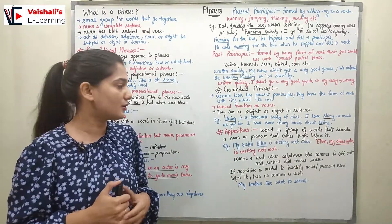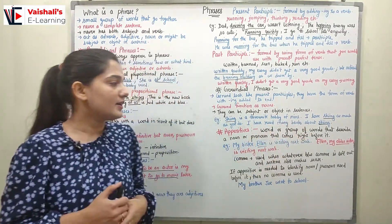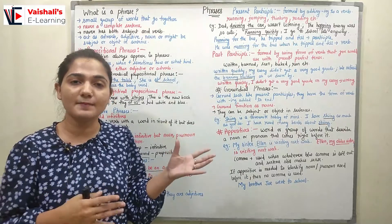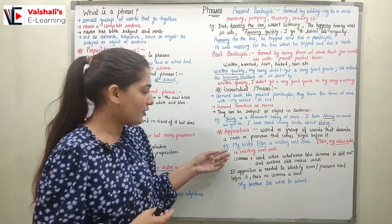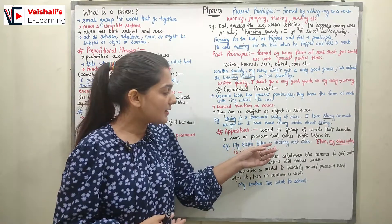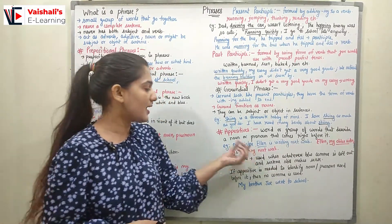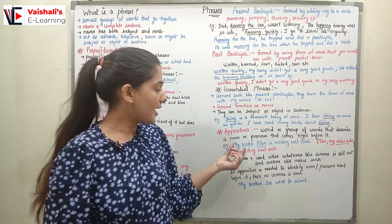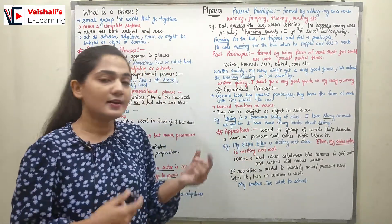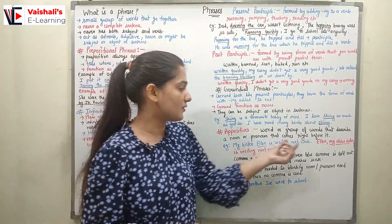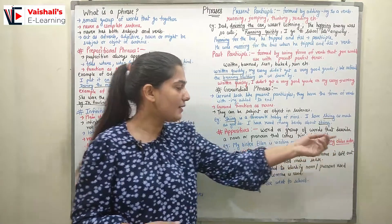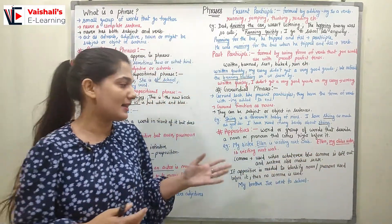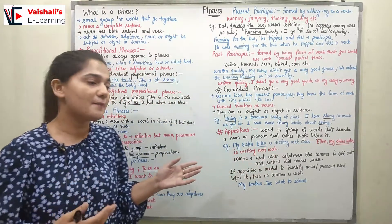An appositive is a word or group of words that describes a noun or pronoun that comes right before it. For example, 'My sister Alan is visiting next week' — 'Alan' is the appositive describing 'my sister'. In 'Alan, my older sister, is visiting next week' — 'my older sister' is the appositive describing 'Alan'.